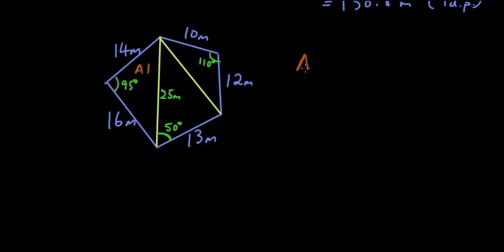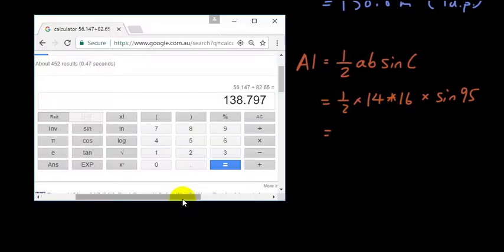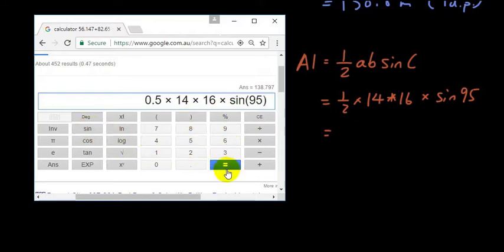So let's call this A1. Area one is equal to, using the sine ratio area rule, half AB sine C. So we got half times, A and B can be in whichever order. So let's say 14 is A, 16 is B times sine of 95 degrees. Put that into your calculator. This should be a times by the way, not plus. Make sure your calculator says degrees. If you can't see the degree symbol, something is wrong. Type 0.5 times 14 times 16 times sine 95 degrees. And the answer is 111.57.